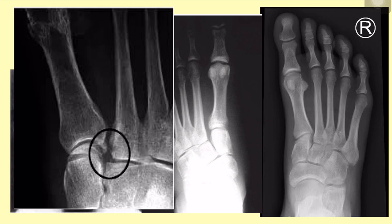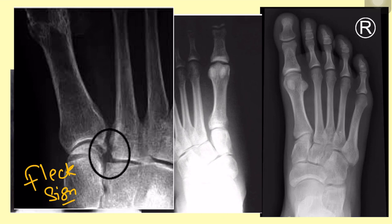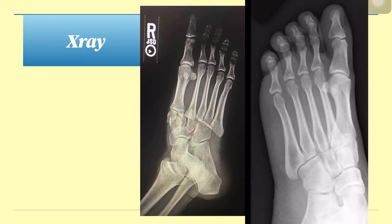Sometimes the Lisfranc ligament does not rupture in the middle — it gets ruptured from the end where it is attached to the bone, creating an avulsion injury. This carries a fragment of bone along with it, creating a sign known as the flag sign. You can see this bony fragment on X-ray. Now let's look at the importance of the oblique view.